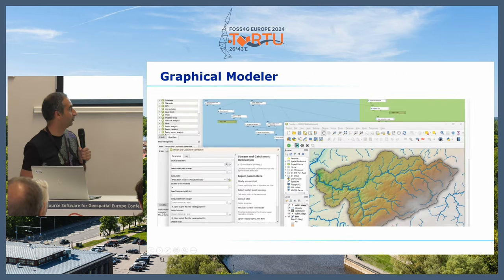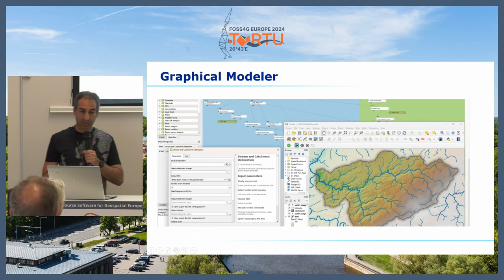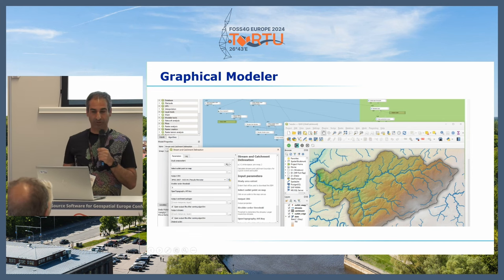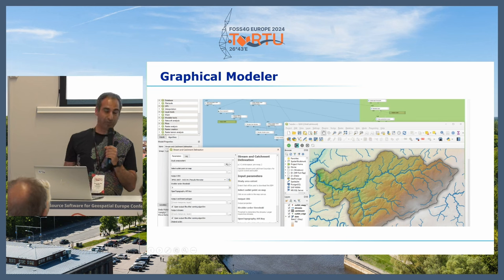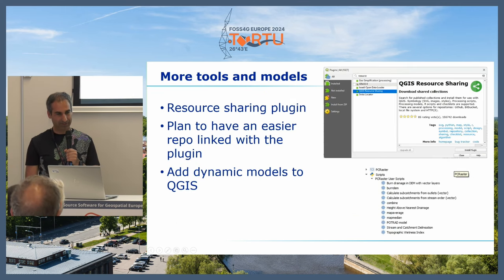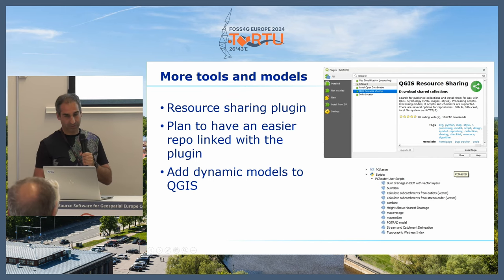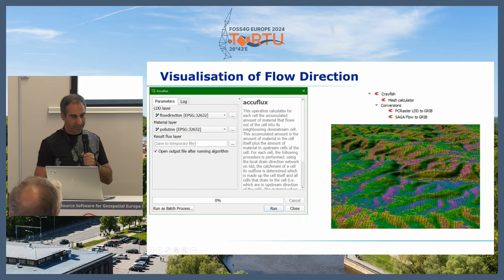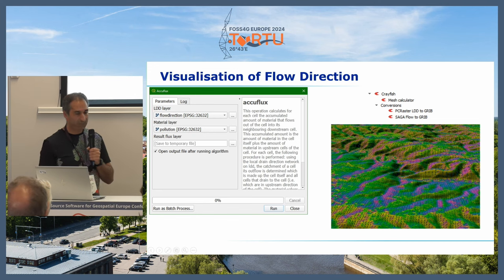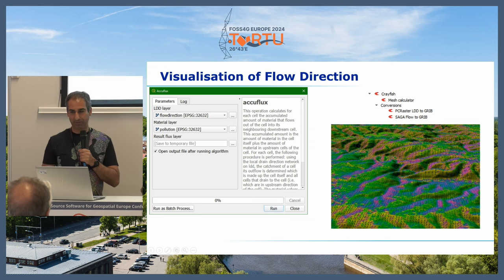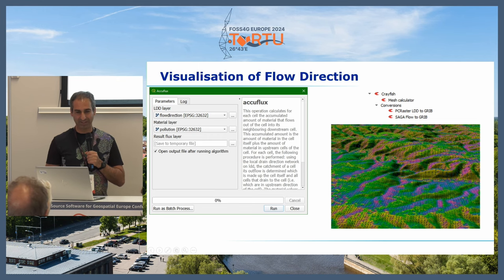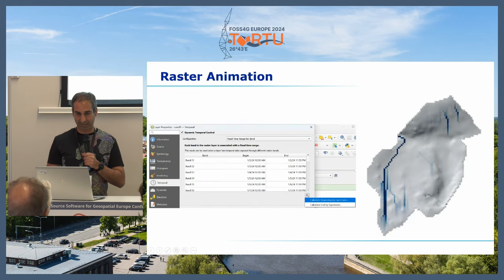You can automate all these steps because processing provider tools can be connected in a graphical model. There's a model that only needs your study area and the point to which you want to route the water, and it does the rest automatically — but it's still important as a specialist to know what's behind it, because it won't always work as expected. With the PCRaster Tools plugin you can add more tools and models; there's a repository where you can find more tools using the QGIS Resource Sharing plugin. There are also nice tools for visualizing flow direction using Crayfish, which plots arrows on your raster showing flow direction using QGIS mesh styling functionality.